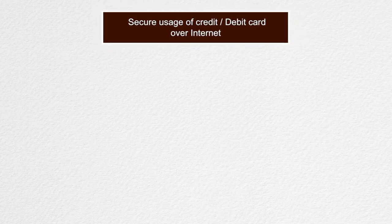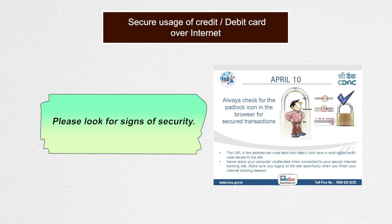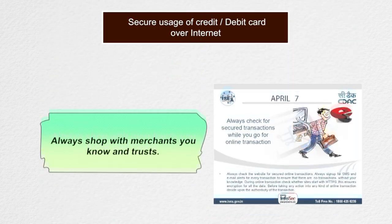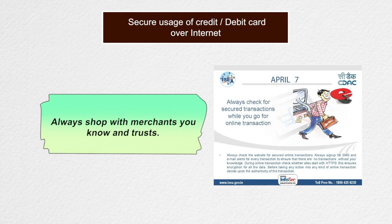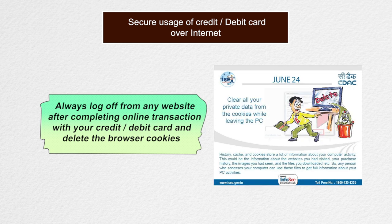For secure use of credit or debit cards over the internet: Always use secure websites for transactions and shopping. Look for signs of security such as a lock image at the bottom of your browser, or a URL that begins with HTTPS. These signs indicate that your purchases are secured with encryption to protect your account information. Always shop with merchants you know and trust. Always log off from any website after completing online transactions and delete the browser cookies.